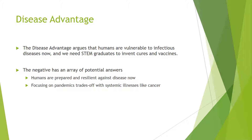The disease advantage argues that humans are vulnerable to infectious diseases, and we need STEM graduates to invent cures and vaccines. The negative has an array of potential answers, from saying that humans are prepared and resilient so disease is not a big threat, and that focusing on pandemics trades off with systemic illnesses like cancer, which actually kill and cause more suffering than the occasional pandemic.